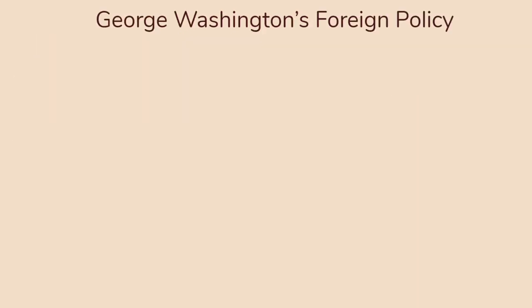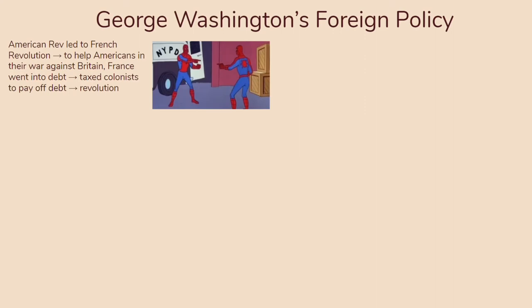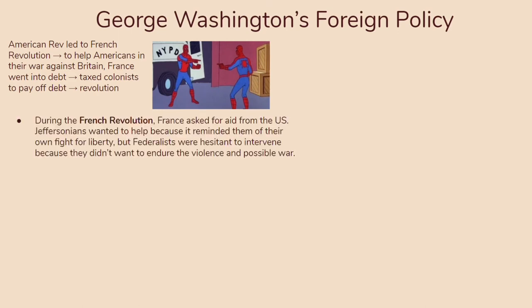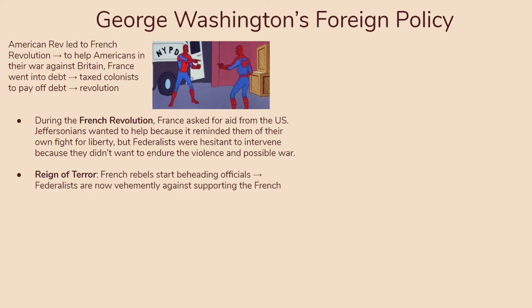Let's talk about George Washington's foreign policy. The American Revolution led to the French Revolution because, to help Americans in their war against Britain, France went into debt and taxed its own people, eventually leading to a revolution. Now America was in a tough situation — do they help France or not? Jeffersonians wanted to help because it reminded them of their own fight for freedom. But Federalists were hesitant to intervene — they were still a new nation and didn't want to get into messy business so quickly. Especially with the Reign of Terror, when French rebels started beheading officials, the Federalists were vehemently against supporting the French.